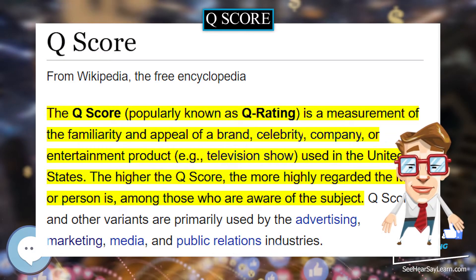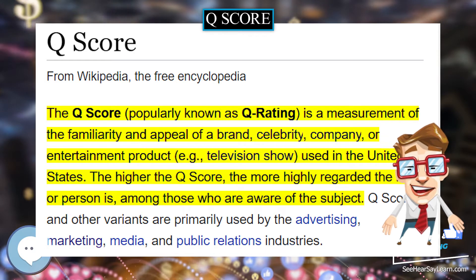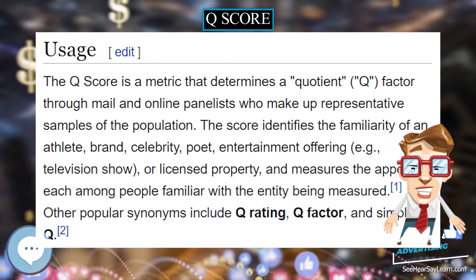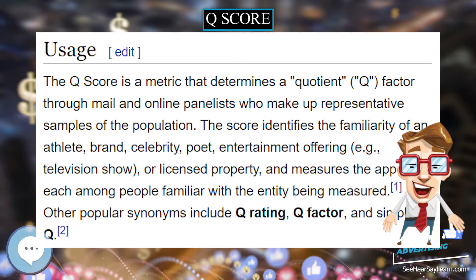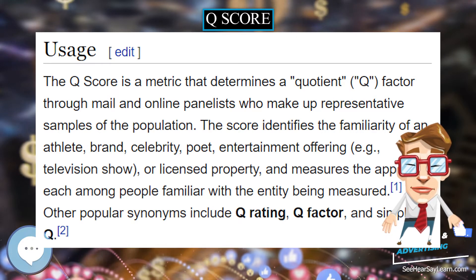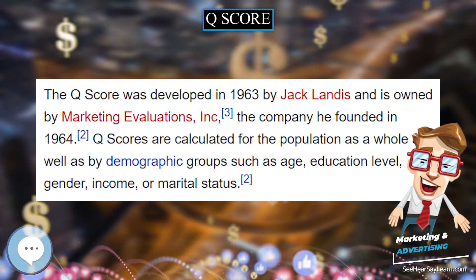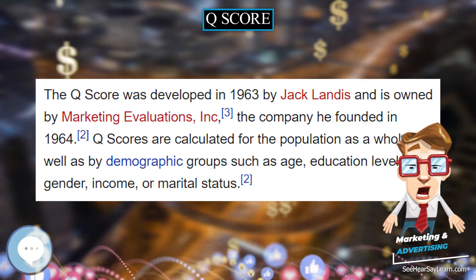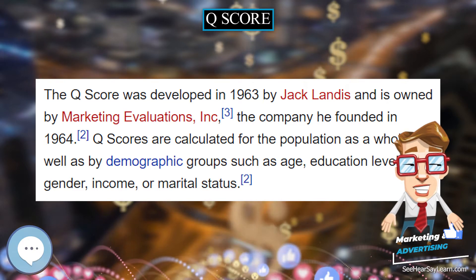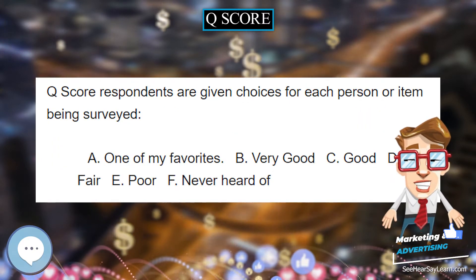The Q-score, popularly known as Q-rating, is a measurement of the familiarity and appeal of a brand, celebrity, company, or entertainment product — for example, a television show — used in the United States.